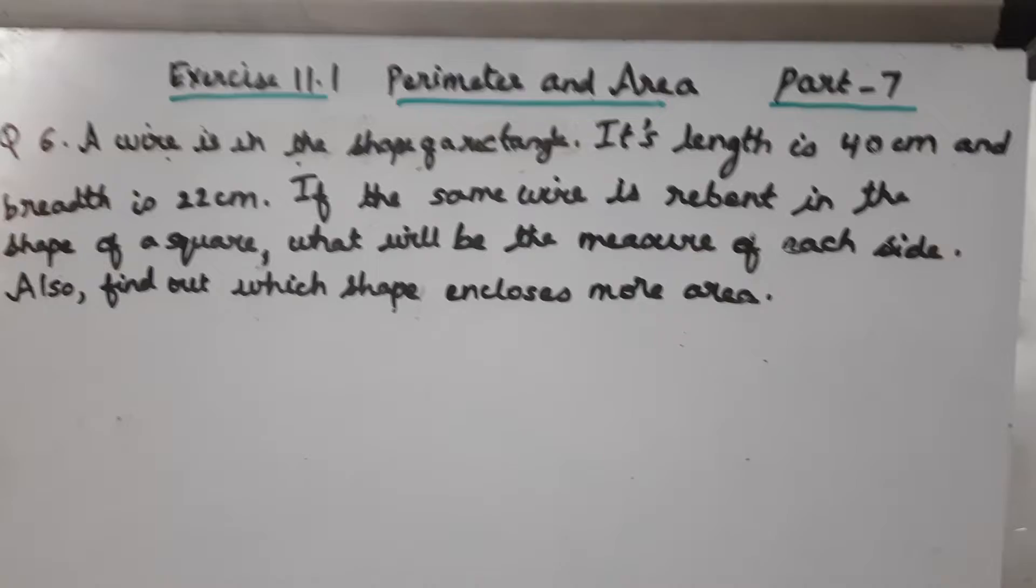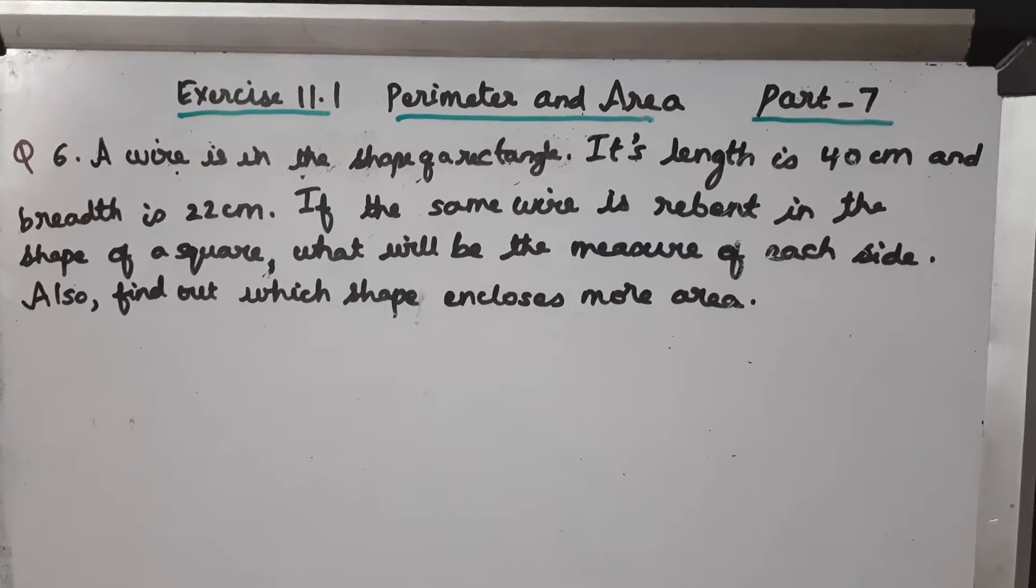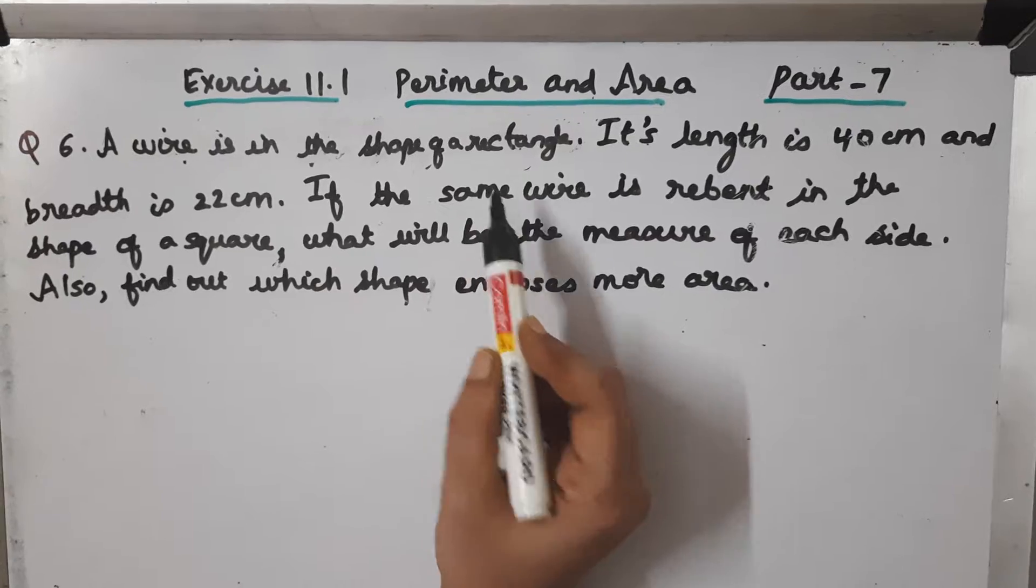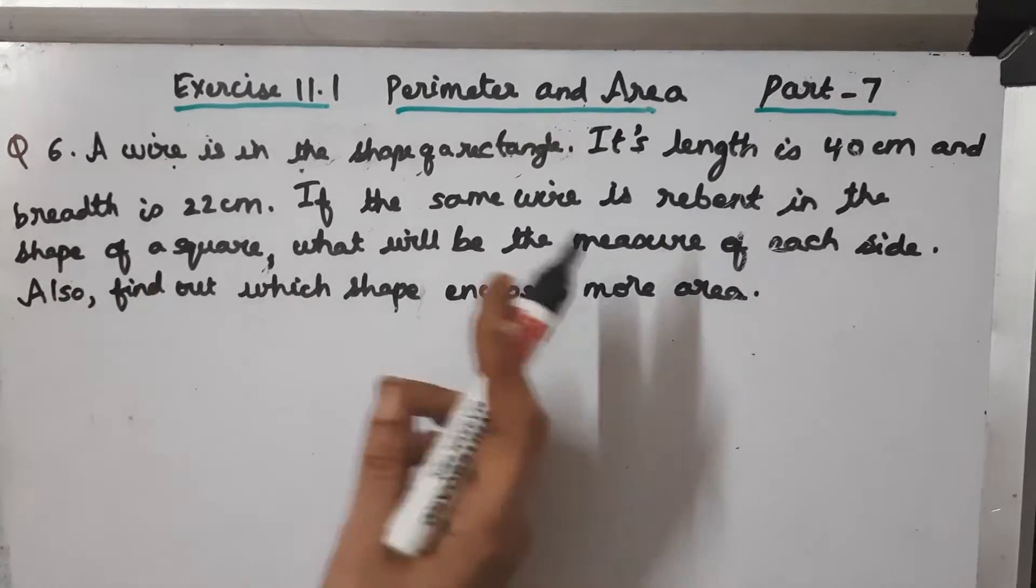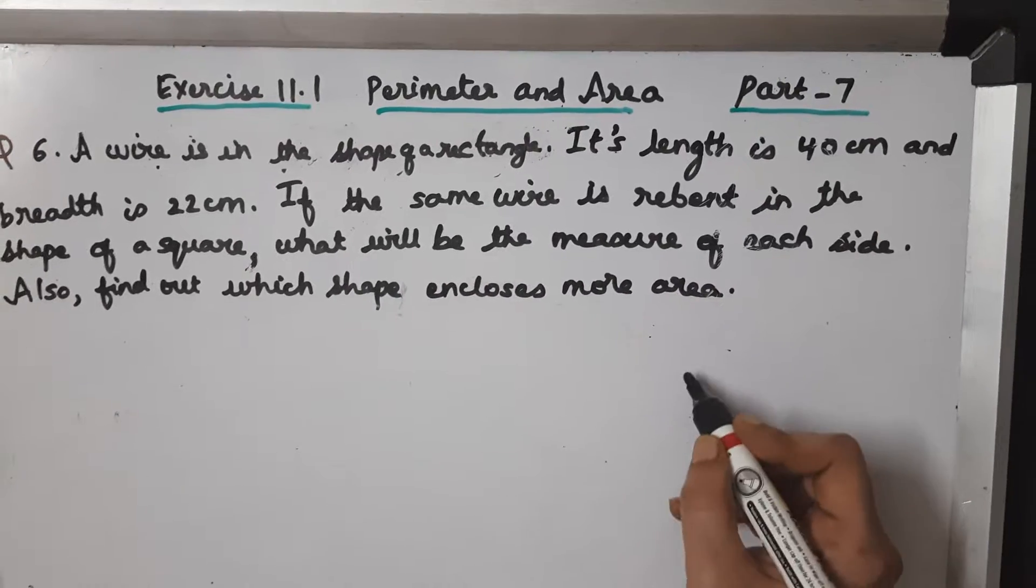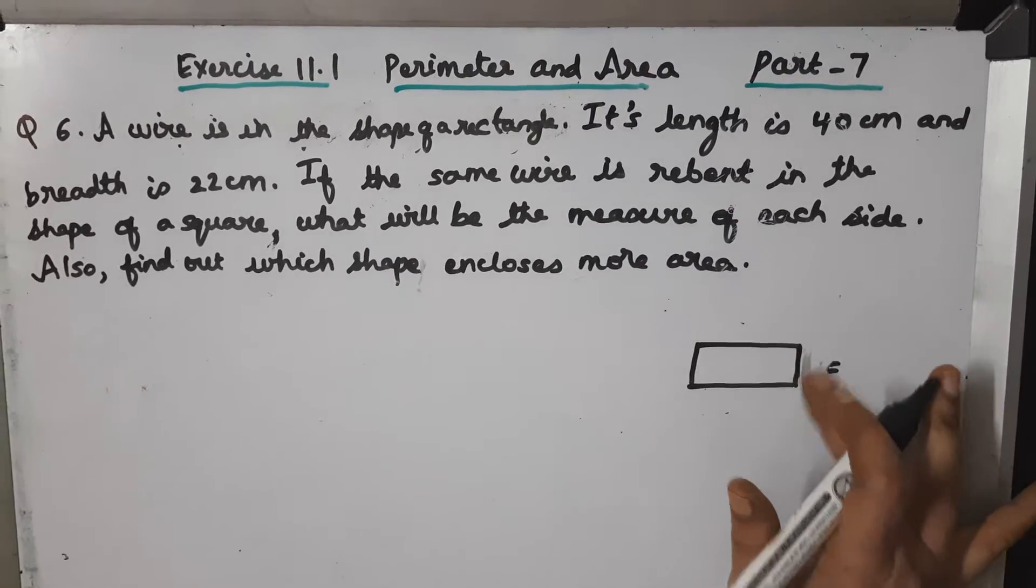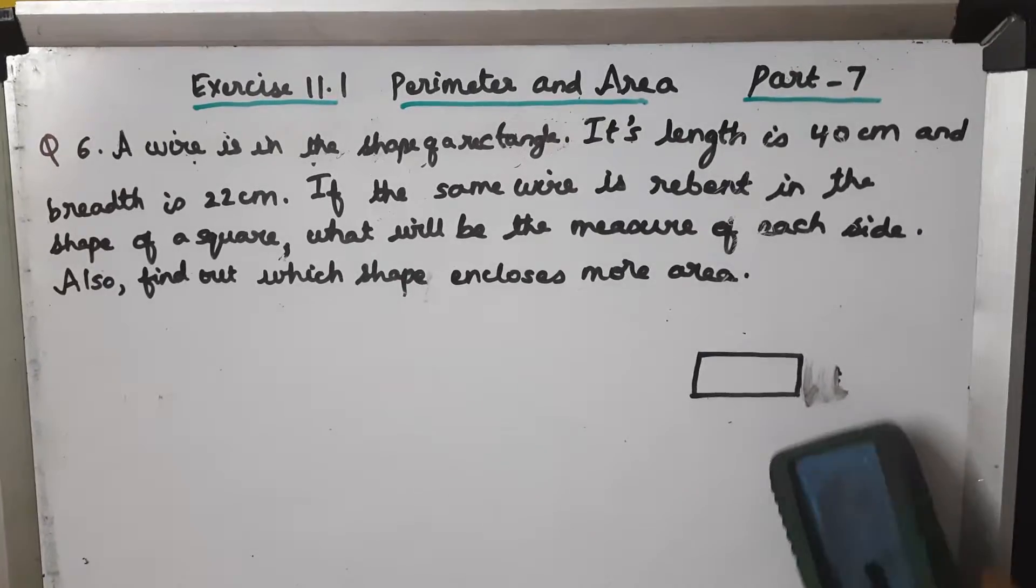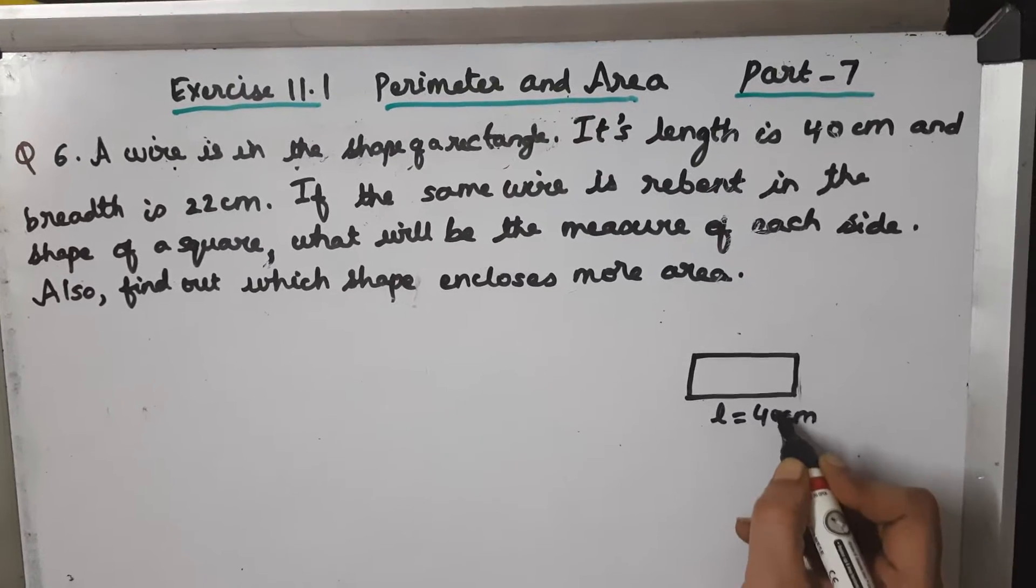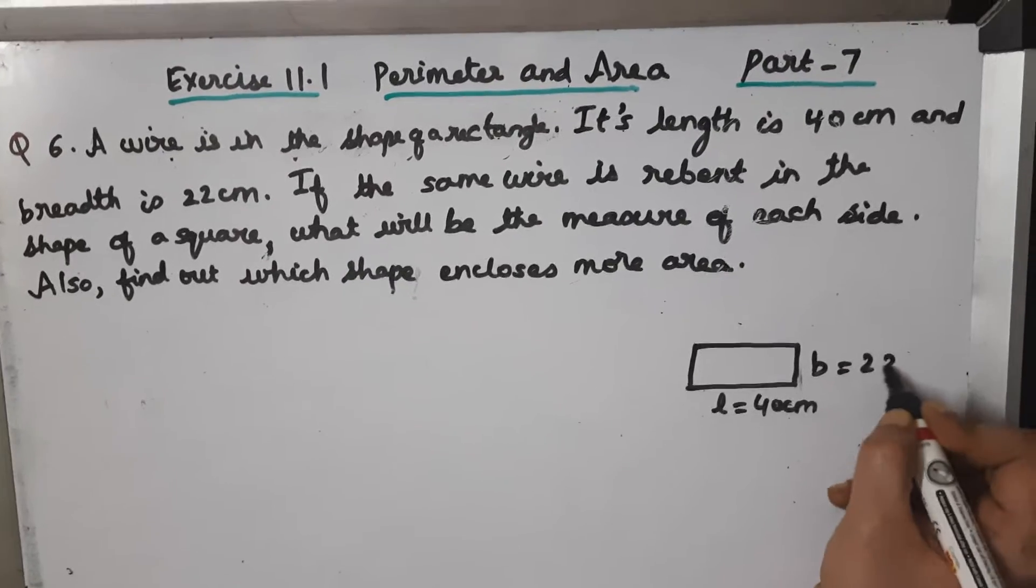Let us first understand the question before we discuss the solution. A wire is in the shape of a rectangle. The dimensions are: length is given as 40 centimeters and breadth is 22 centimeters.